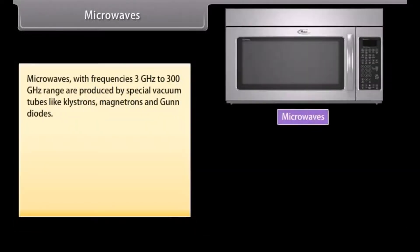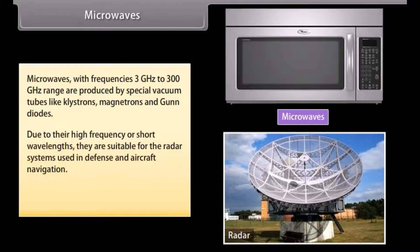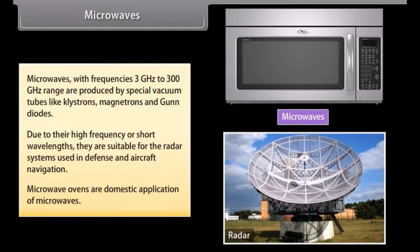Microwaves: with frequencies in the 3 GHz to 300 GHz range, are produced by special vacuum tubes like klystrons, magnetrons, and gun diodes. Due to their high frequency or short wavelengths, they are suitable for radar systems used in defense and aircraft navigation. Microwave ovens are a domestic application of microwaves.